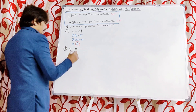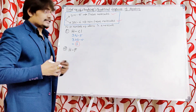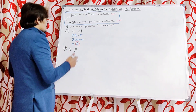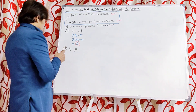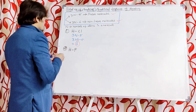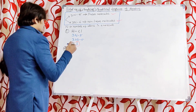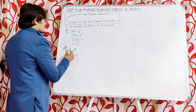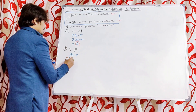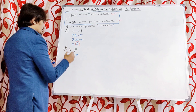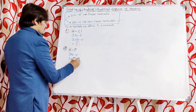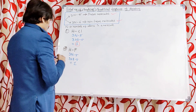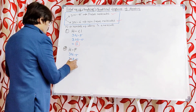HF is also a diatomic molecule, so it is definitely linear. The same formula is applicable: 3N minus 5. N is the number of atoms — hydrogen and fluorine — so 2 atoms. 3 into 2 minus 5 equals 1. So one vibration is possible even for the HF molecule.